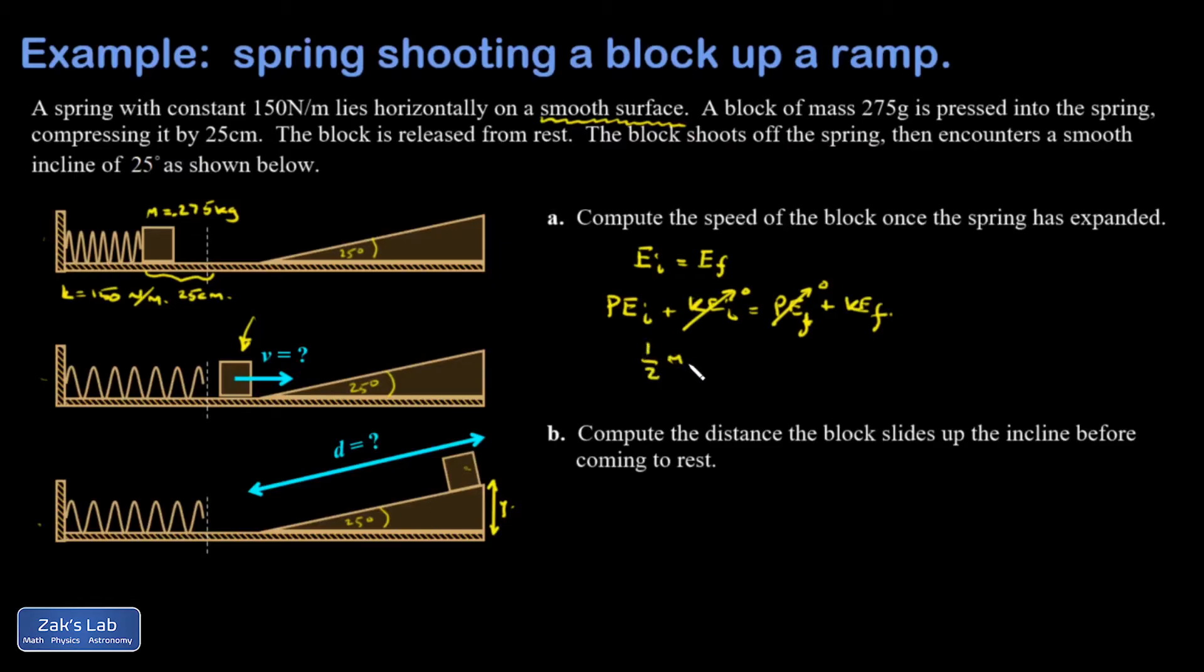One-half kx initial squared. That's the spring potential energy is equal to one-half mv squared, the final kinetic energy of the block. I'll even put an f on that v to say it's v final. And I can just go ahead and solve for v out of this. Divide by m and square root the result.